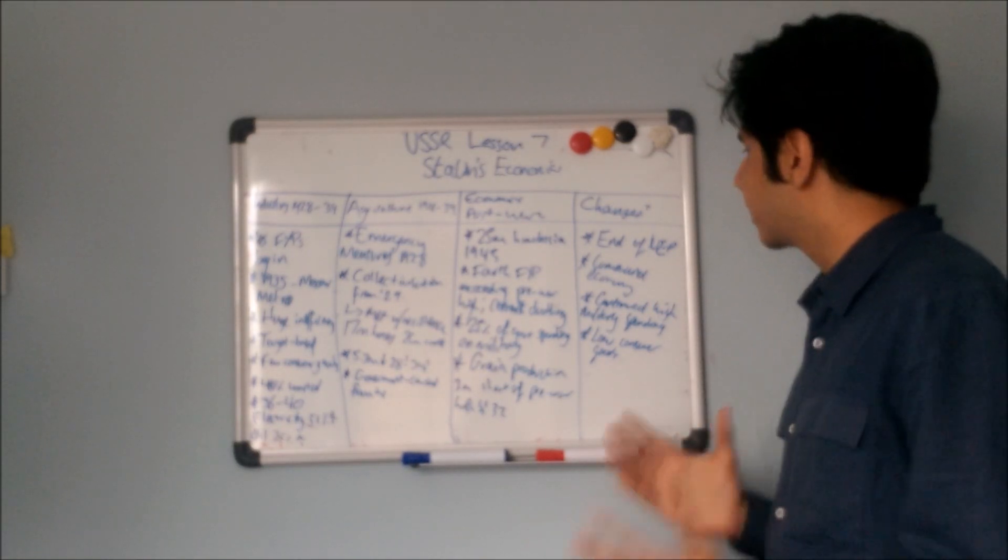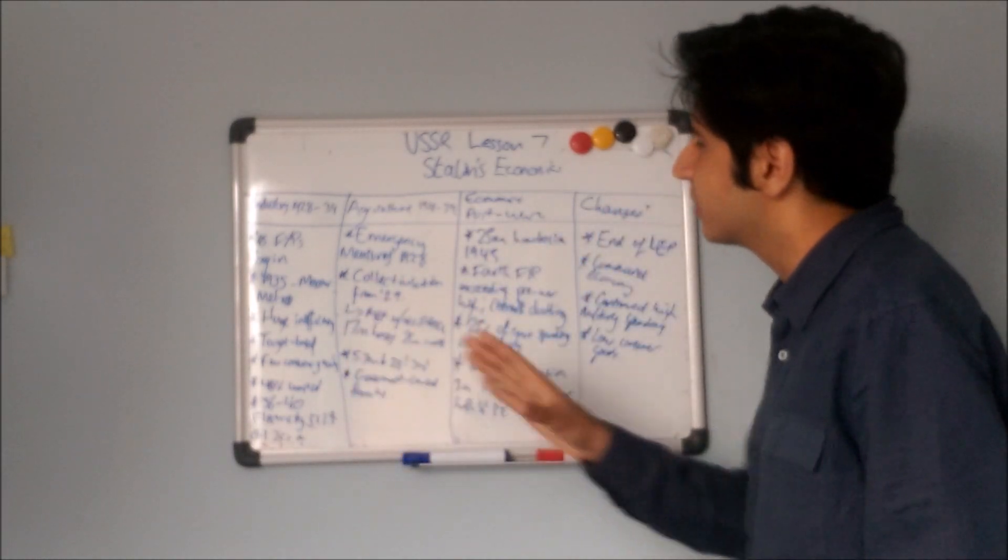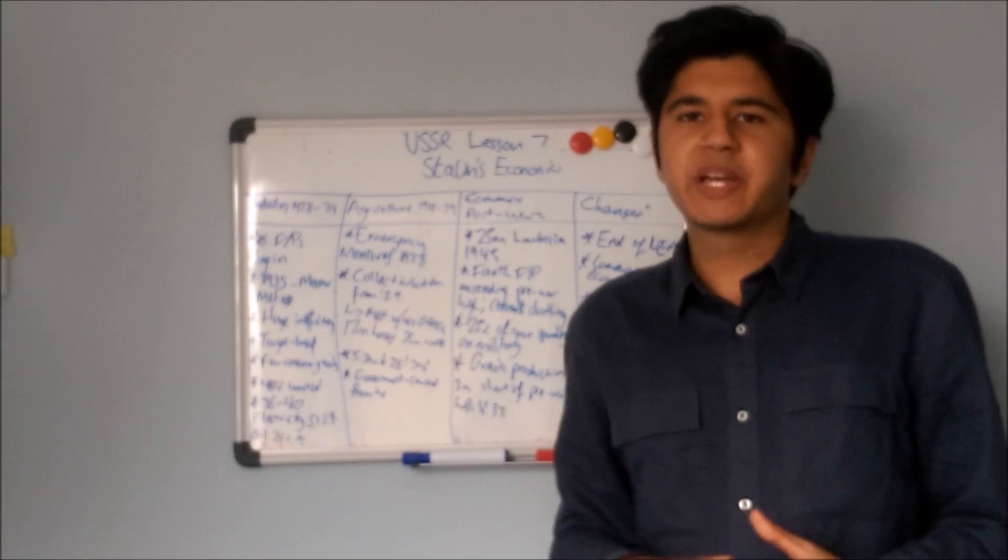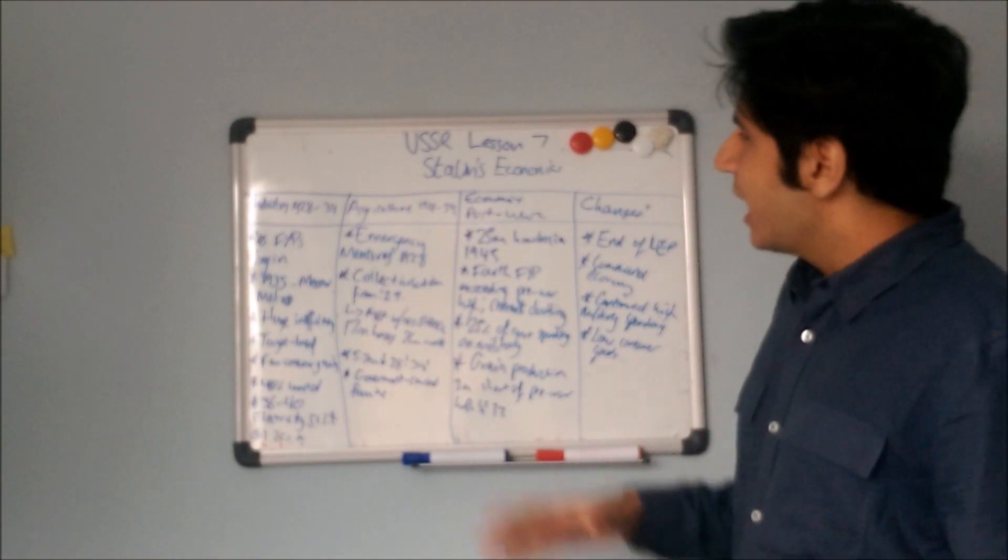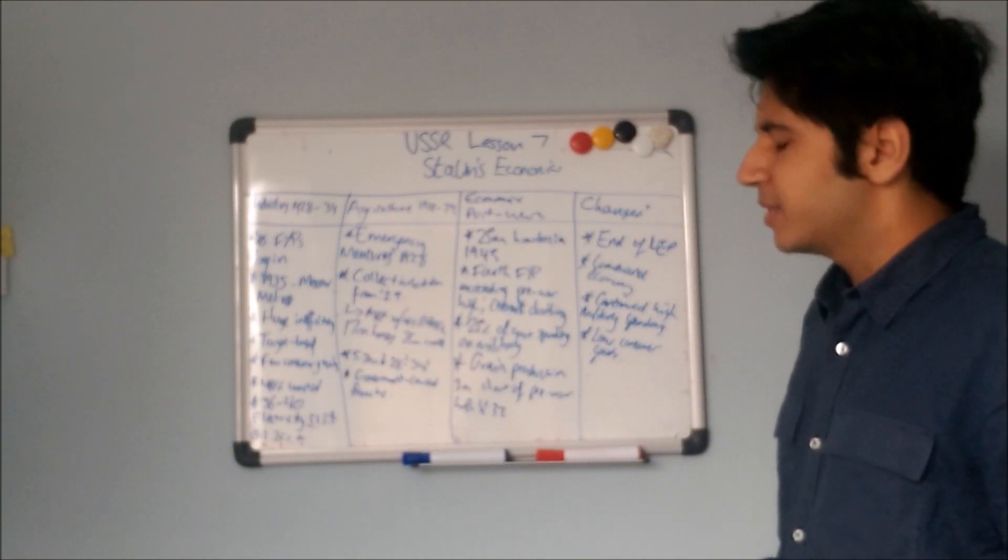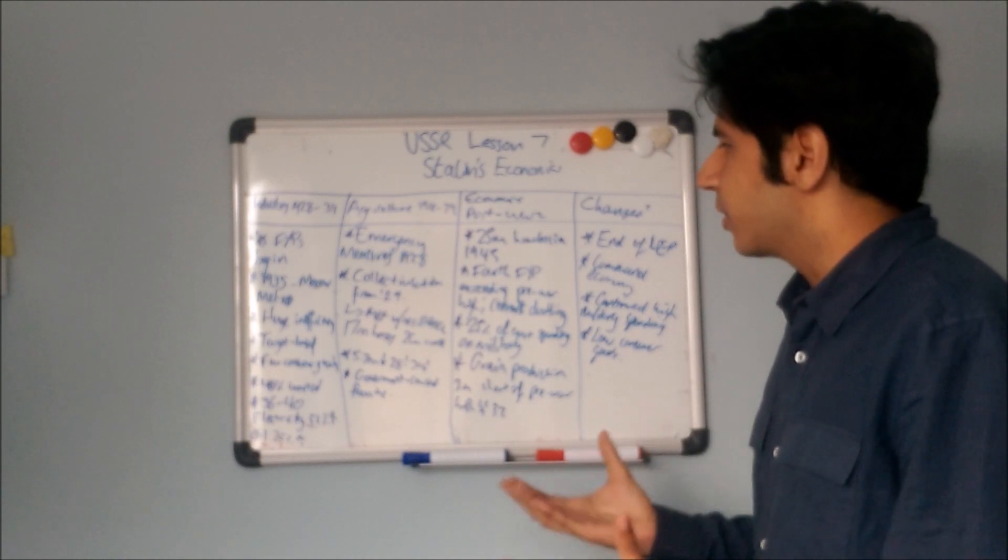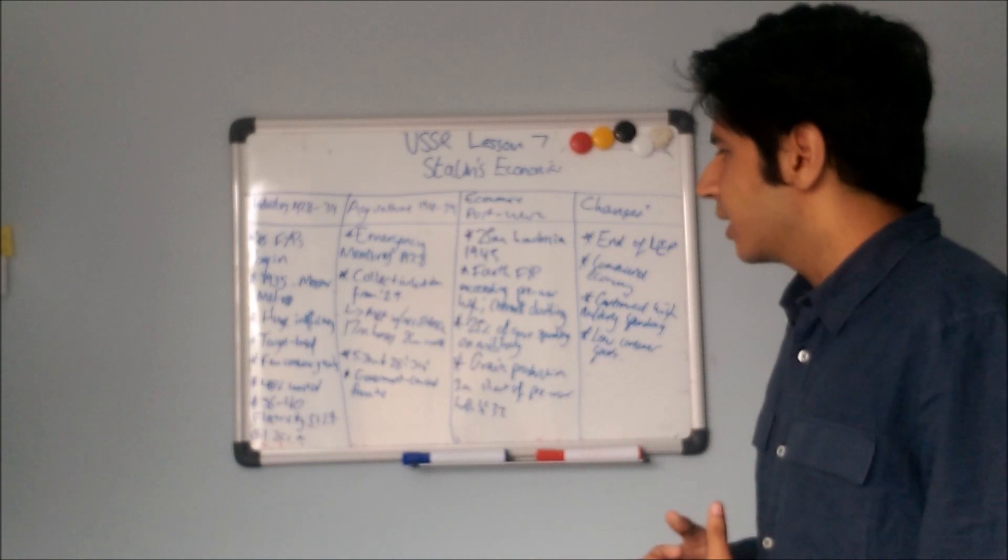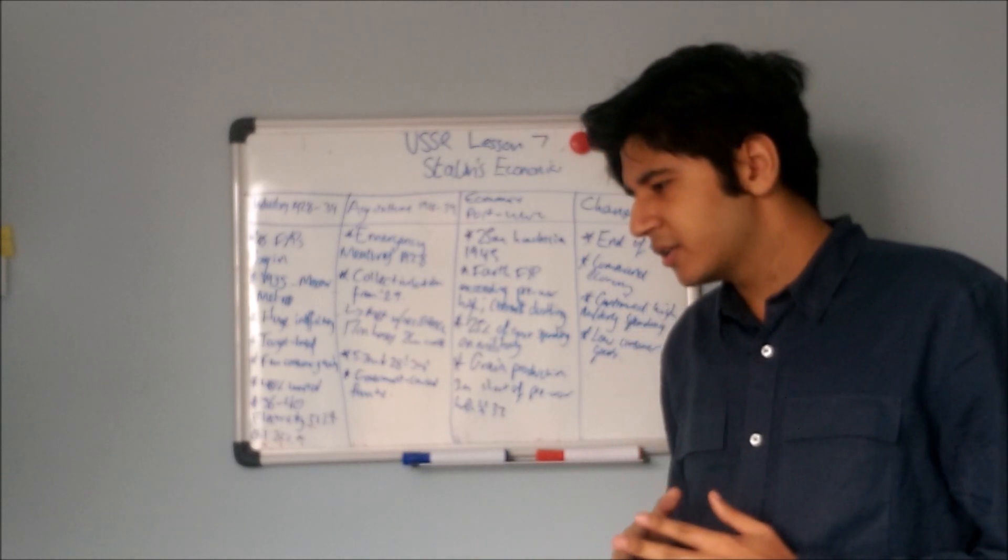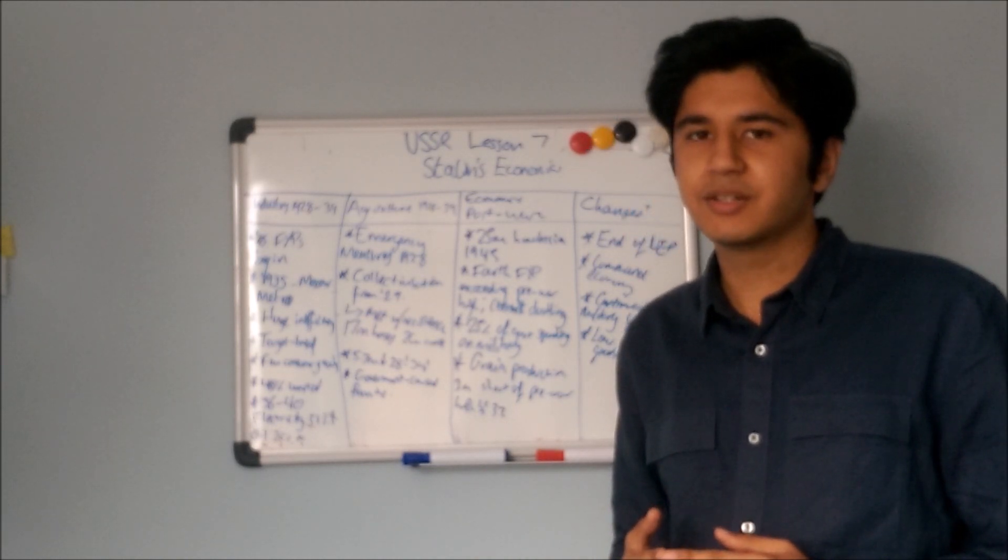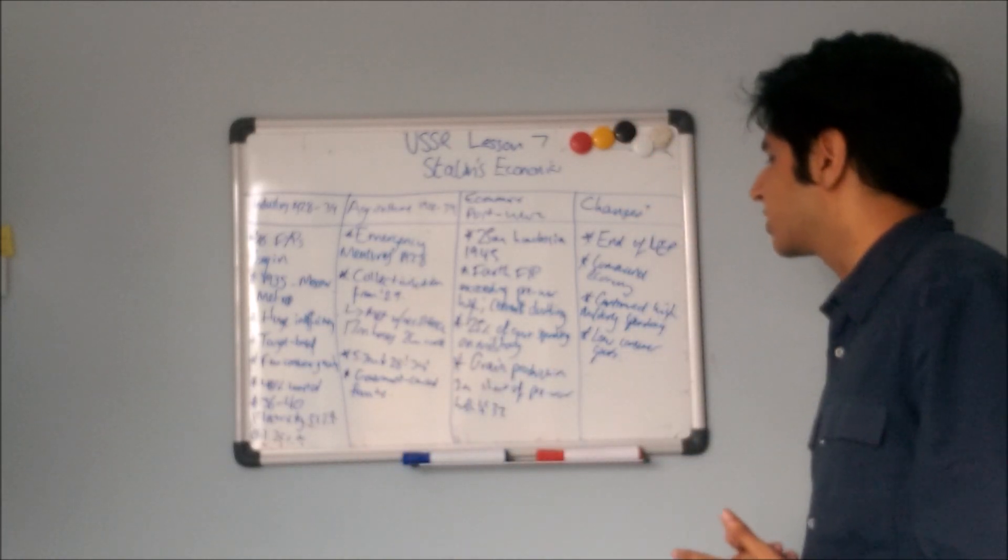Finally, we can look at some of the changes that took place, not only within this period, but between Lenin and Stalin. The biggest one, and the one I would expect most people to write about in their exams, is the end of the new economic policy. Under Lenin, particularly after the Civil War, there was some form of market liberalization. It wasn't totally state-owned, but this was entirely overturned by Stalin. Stalin saw that the NEP wasn't working by 1928 and decided just to completely overhaul it.